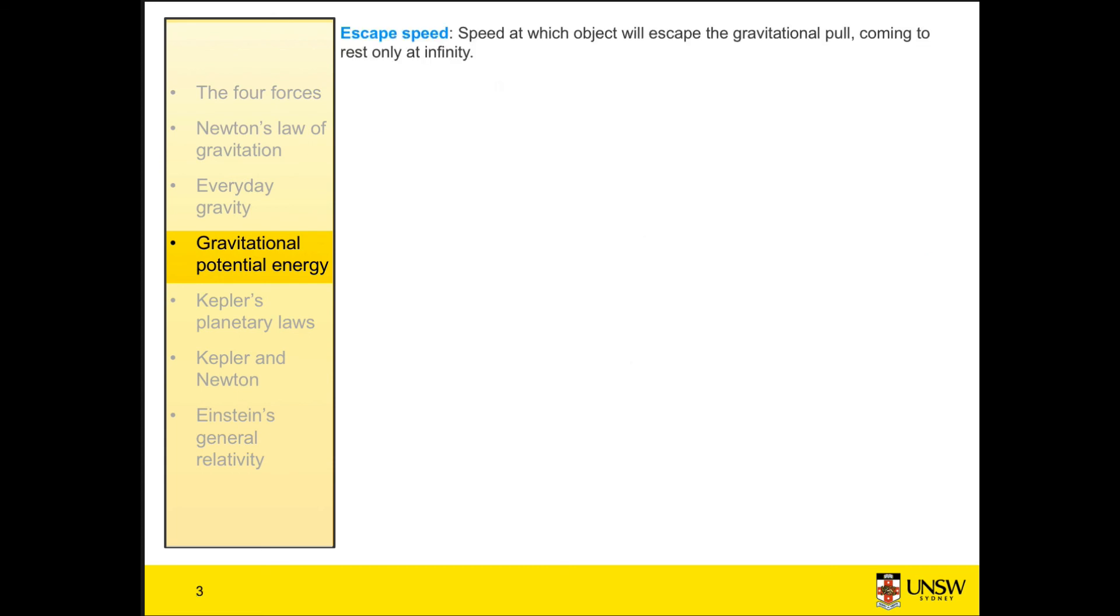Now that we know how to find the gravitational potential energy of any object at any point in a gravitational field, it's possible for us to find the escape speed of that object, which is the speed it must be traveling in order to escape the gravitational pull of the planet.